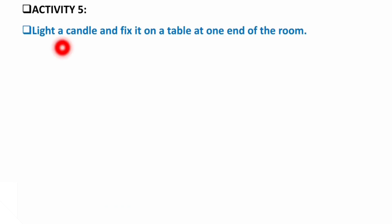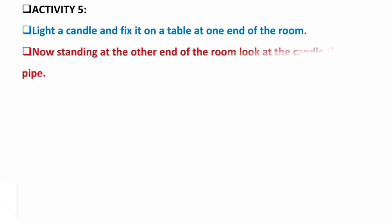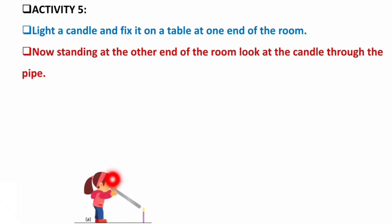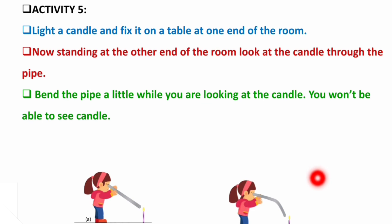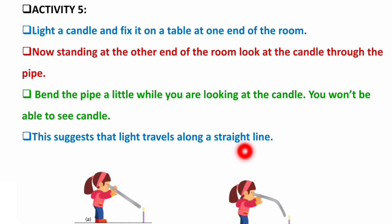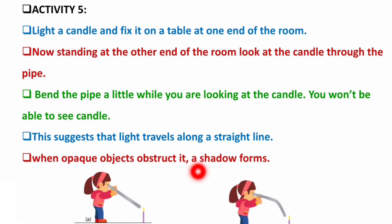Activity 5: Light a candle and fix it on a table at one end of the room. Standing at the other end, look at the candle through a straight pipe — you can see it clearly. Now bend the pipe a little while looking at the candle — you will not be able to see the candle. This suggests that light travels in a straight line. When the pipe is curved, the light cannot travel around the curve. When an opaque object obstructs light, a shadow is formed.